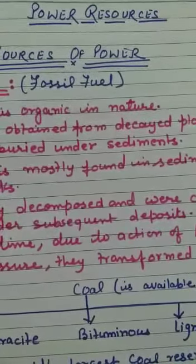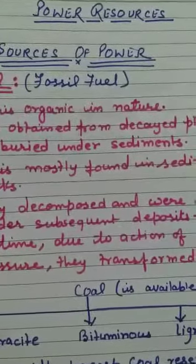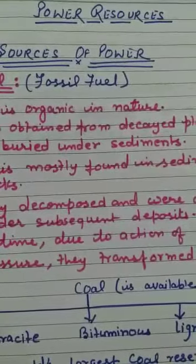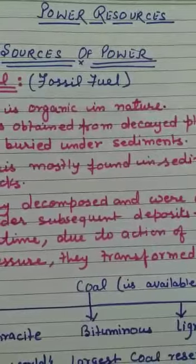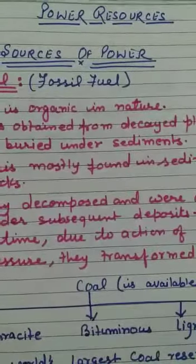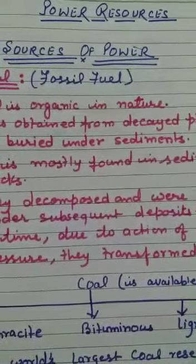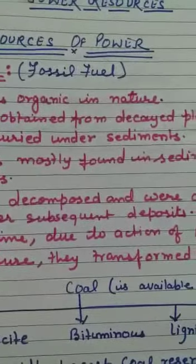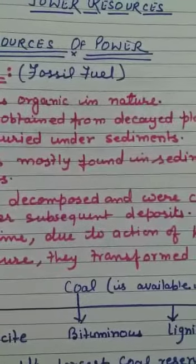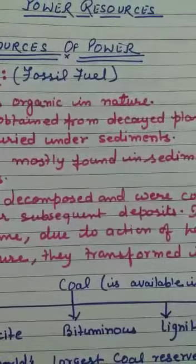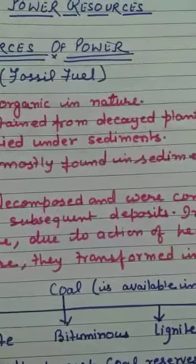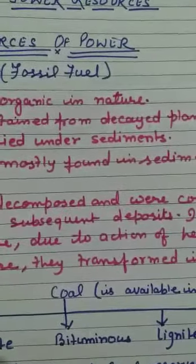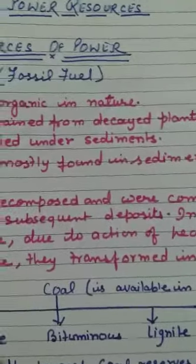Coal was the basis of the industrial revolution in the late 18th century. It was used to produce steam power, which provided the main driving force for running machinery in factories, railway locomotives and ships. Afterwards, coal was used to generate thermal electricity.